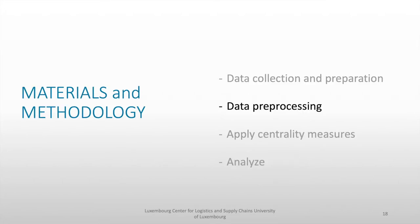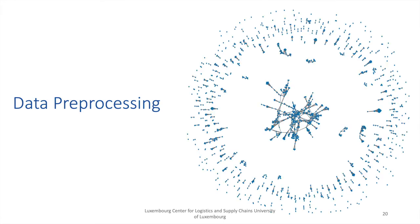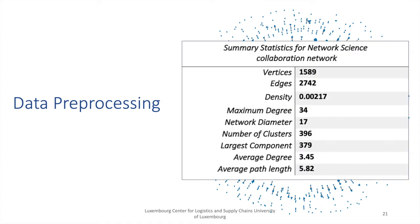The third step is data preprocessing. I wanted to look at the data on a macro level to understand how the network actually looks in order to infer what analysis we need to do. I plotted out the entire network, and it's really very scattered with one big cluster in the center. Let's look at some summary statistics for this particular network.